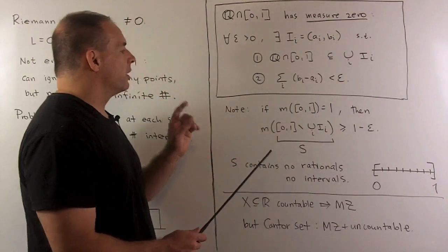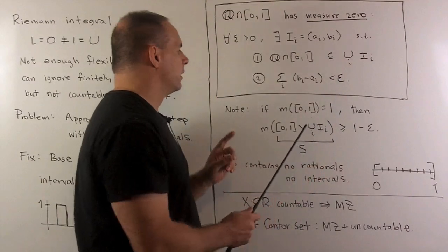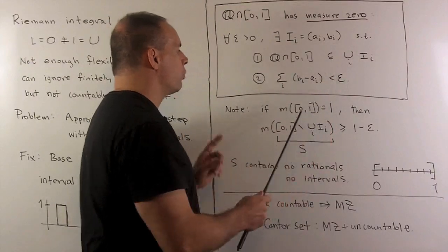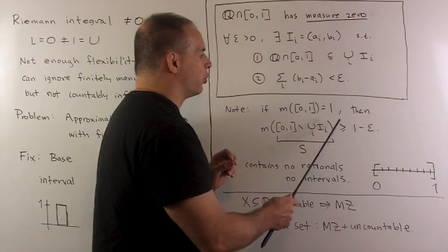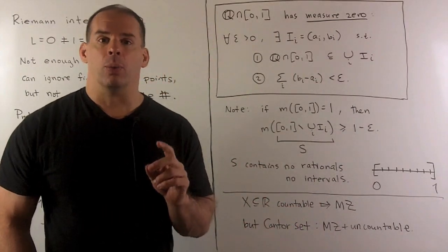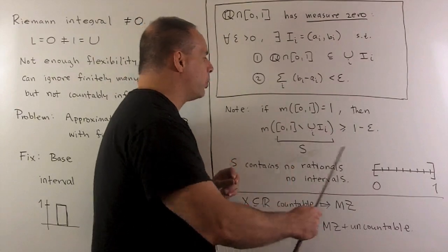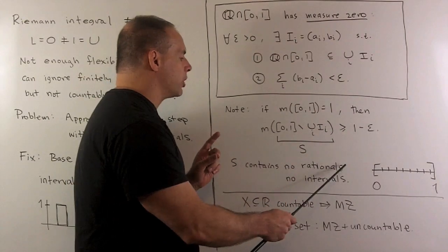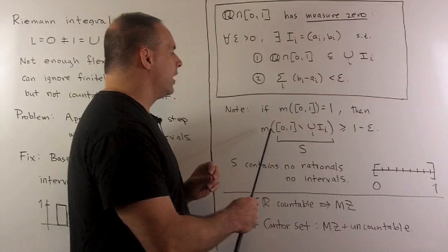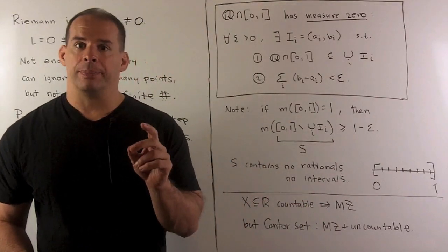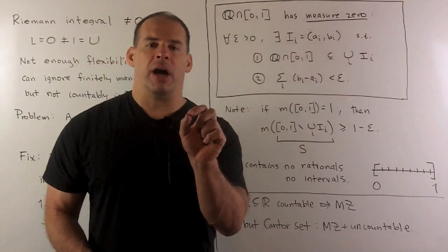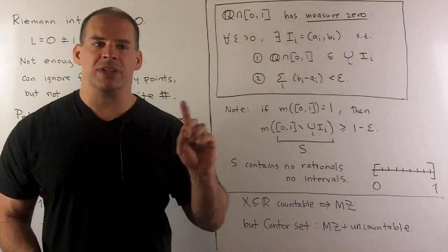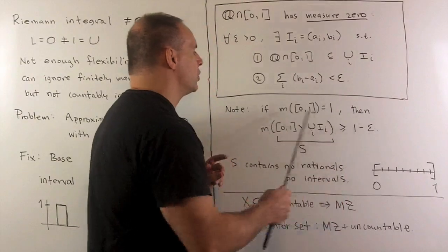Let's consider the complement of one of these covers. The length of our interval is one. If we take one of these covers and remove it from our interval, the measure of what's left over is greater than or equal to one minus epsilon. So when we take away this cover, there are going to be a lot of points left. But we're also throwing away all the rational numbers — and not just the rationals, but a little bit of area around each rational number too. So we can throw all that away and still be left with a set that has measure very close to one.